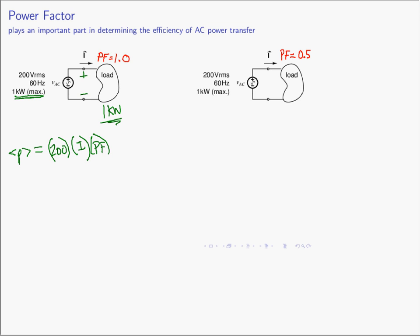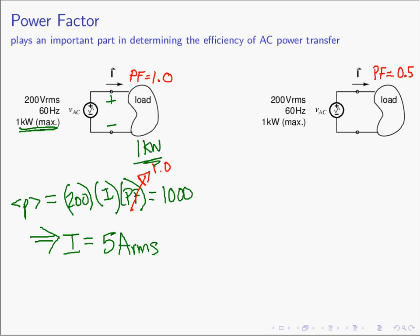Cosine of theta minus phi is the power factor. If we're going to receive one kilowatt at our load and do this analysis, we know that operating at a power factor of 1.0, the current that flows is 5 amps RMS. In this situation, the utility is generating one kilowatt at their source. Since we're operating at a power factor of 1.0, our current and voltage are in phase, our load is receiving one kilowatt, and for that to happen the utility is sending us 5 amperes of current.